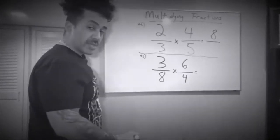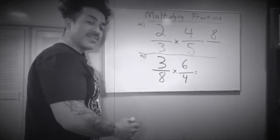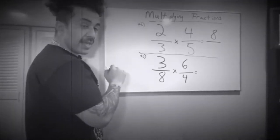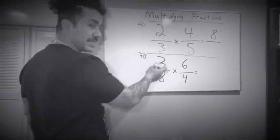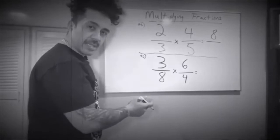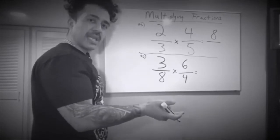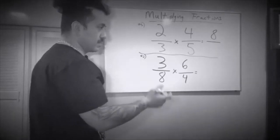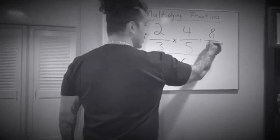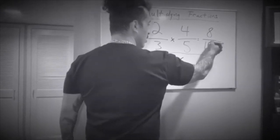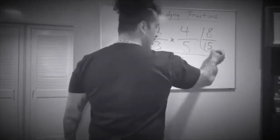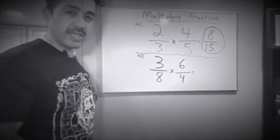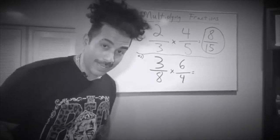What's 3 times 5? It's 15. Now why are we multiplying those? It's the bottom — the denominators. 3 times 5 is 15. So the final answer is 8 over 15.